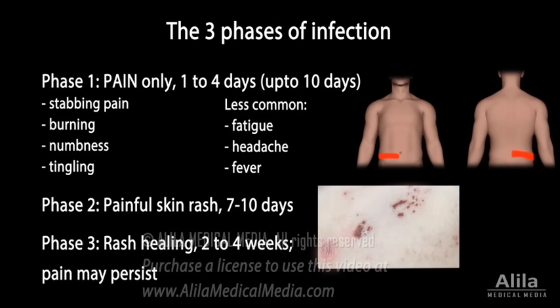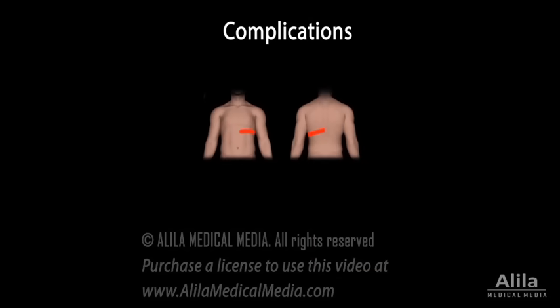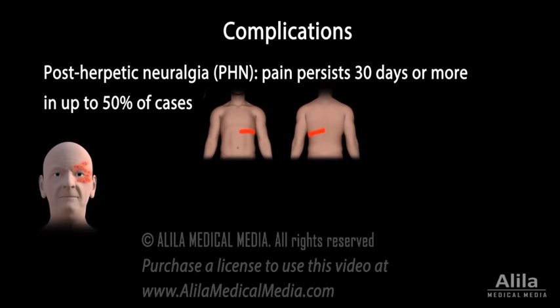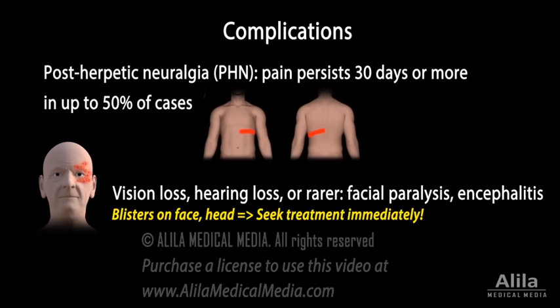The healing occurs in phase 3, which may take several weeks. There is no cure for shingles, but it is usually self-limited and resolves on its own. However, possible complications can be severe. Some patients may continue to experience debilitating pain beyond rash healing in a condition known as post-herpetic neuralgia, or PHN. The chance of developing PHN increases with age. Shingles that occur on the face, neck, or scalp may lead to vision loss, hearing loss, or other neurological problems. If blisters aren't properly treated, bacterial skin infections may develop.